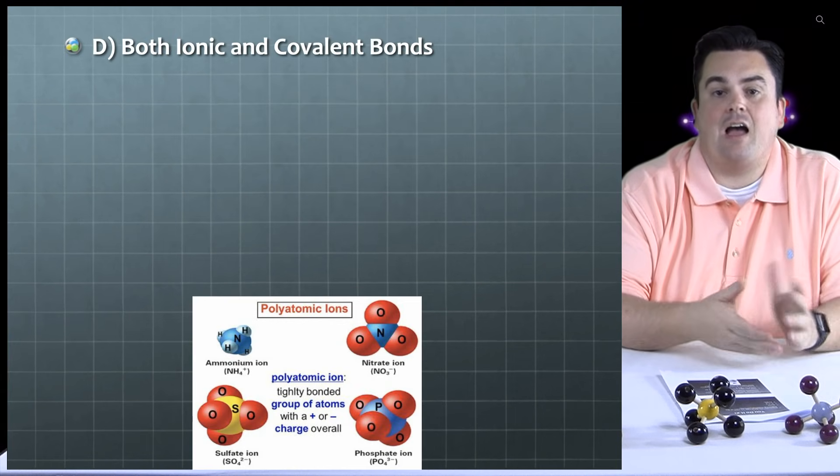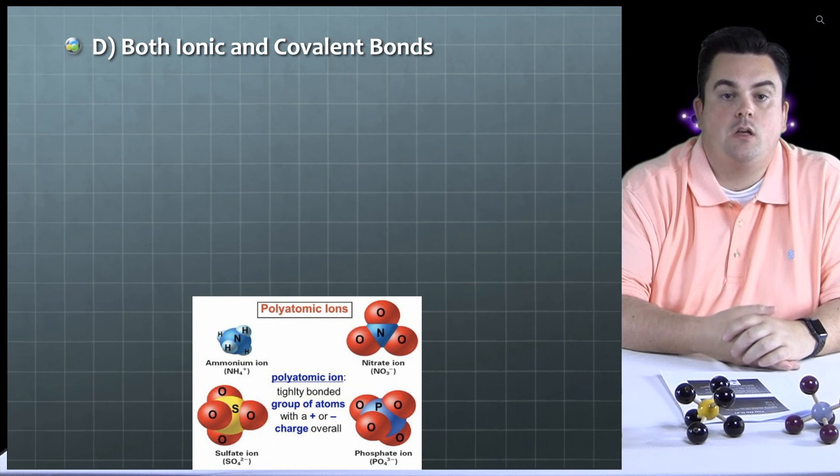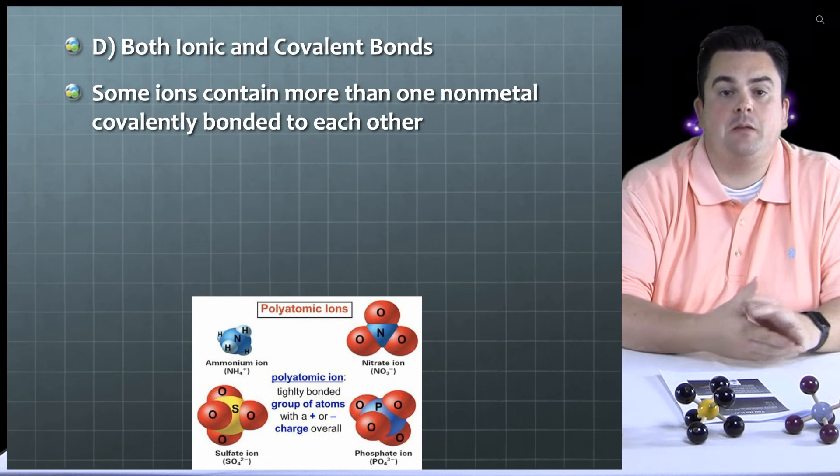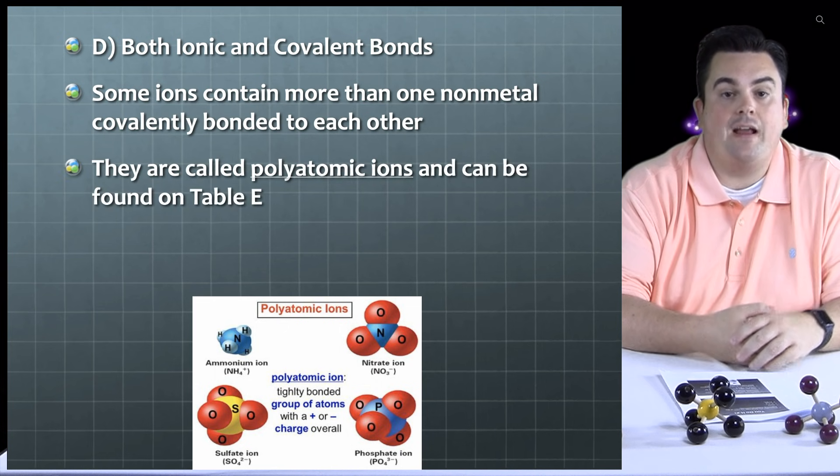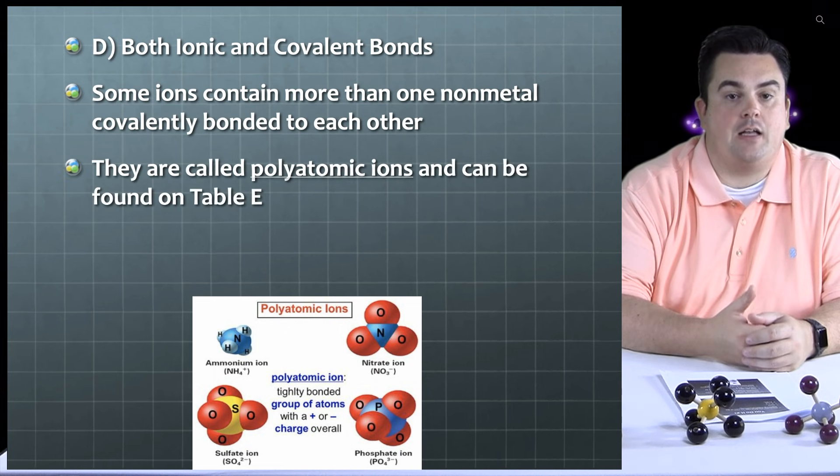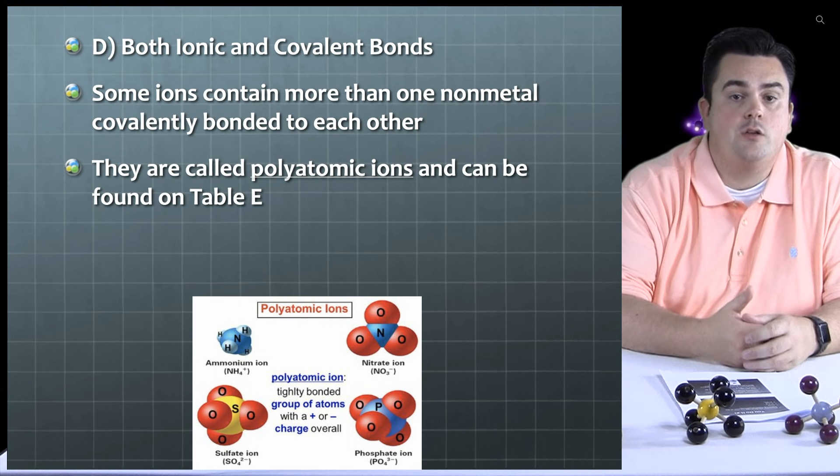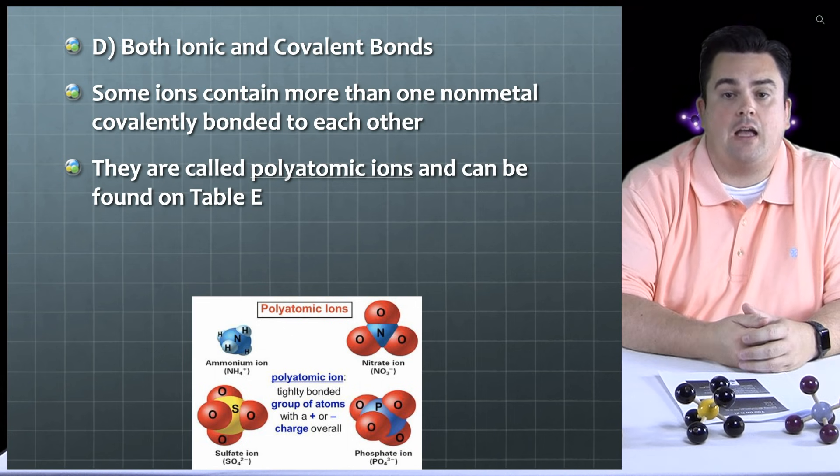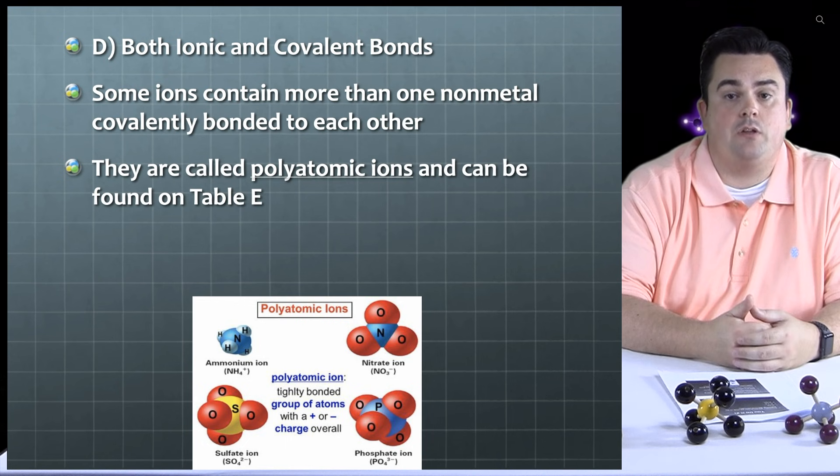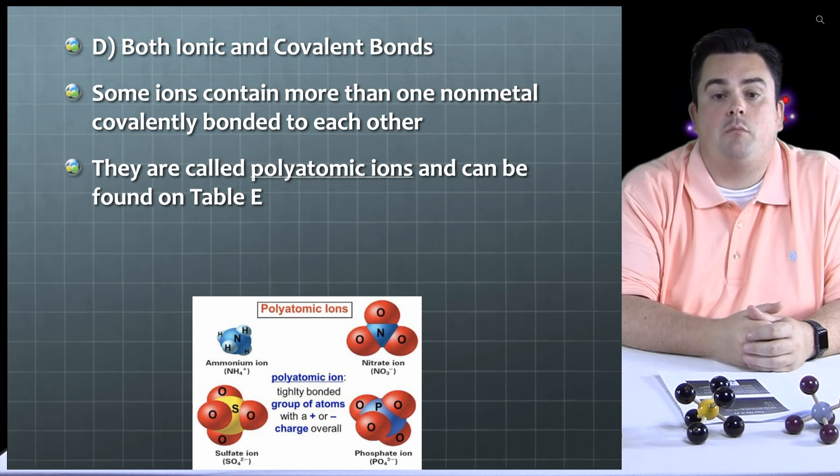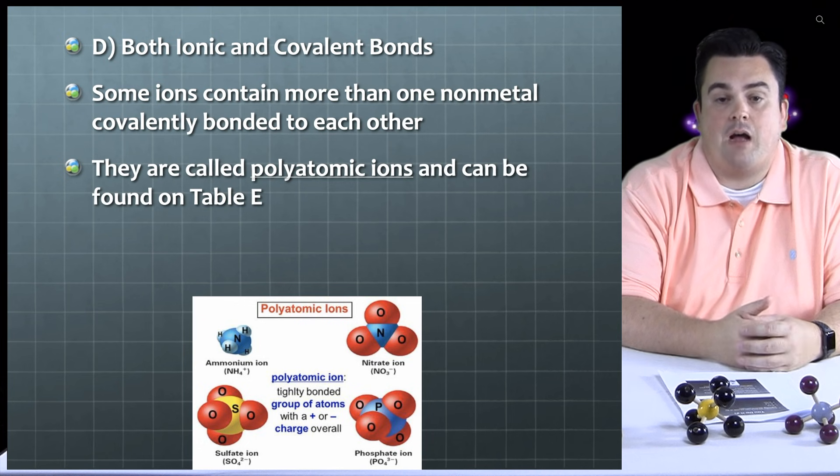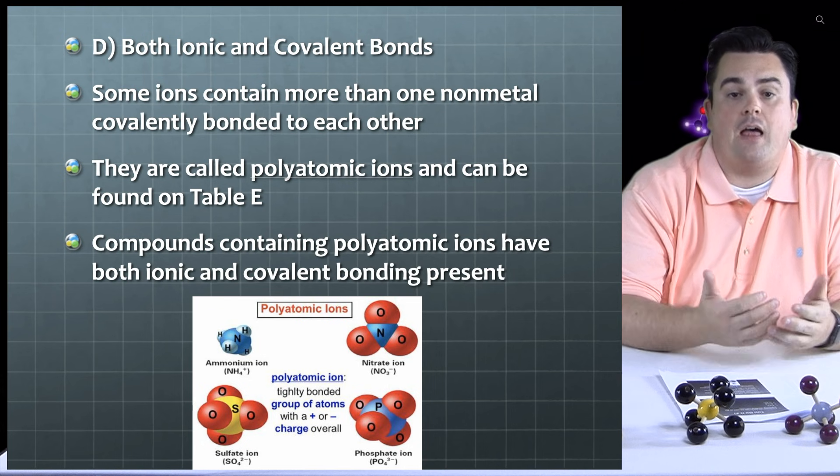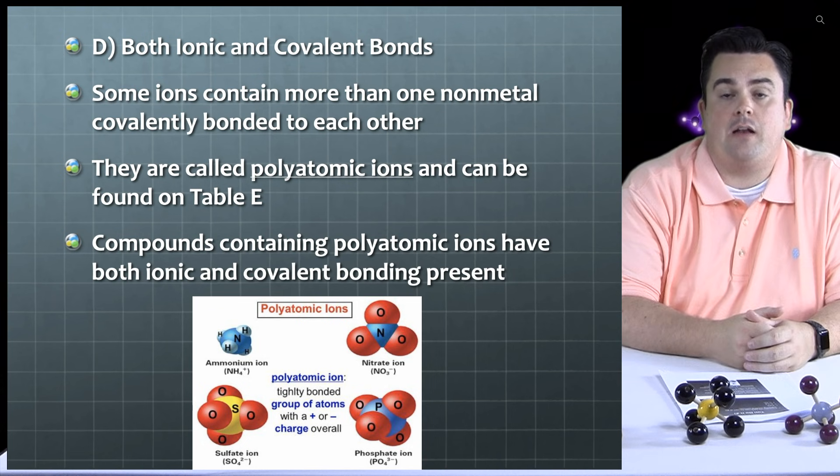Bonding that has both ionic and covalent bonds. Some ions contain more than one non-metal covalently bonded to each other. They are called polyatomic ions. Now, poly is the prefix that means many, so many atoms, polyatomic, contained within the ion. And can be found on table E. If you take a look at the diagram below, you've got some examples of some polyatomic ions. So compounds containing polyatomic ions have both ionic and covalent bonding present.